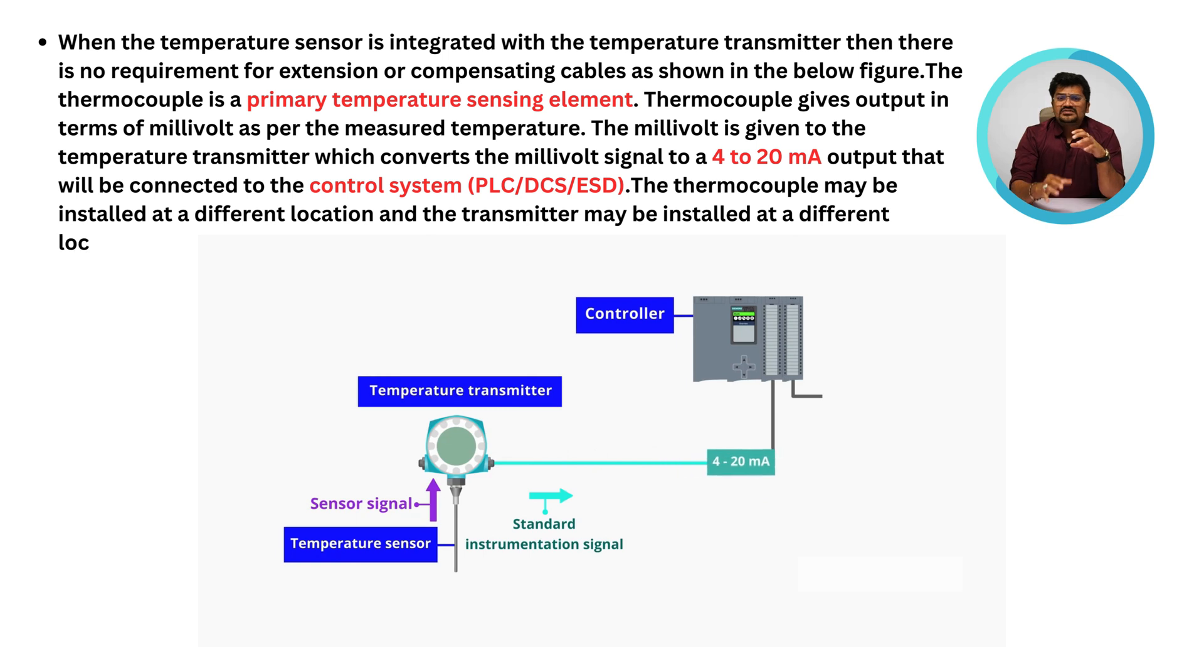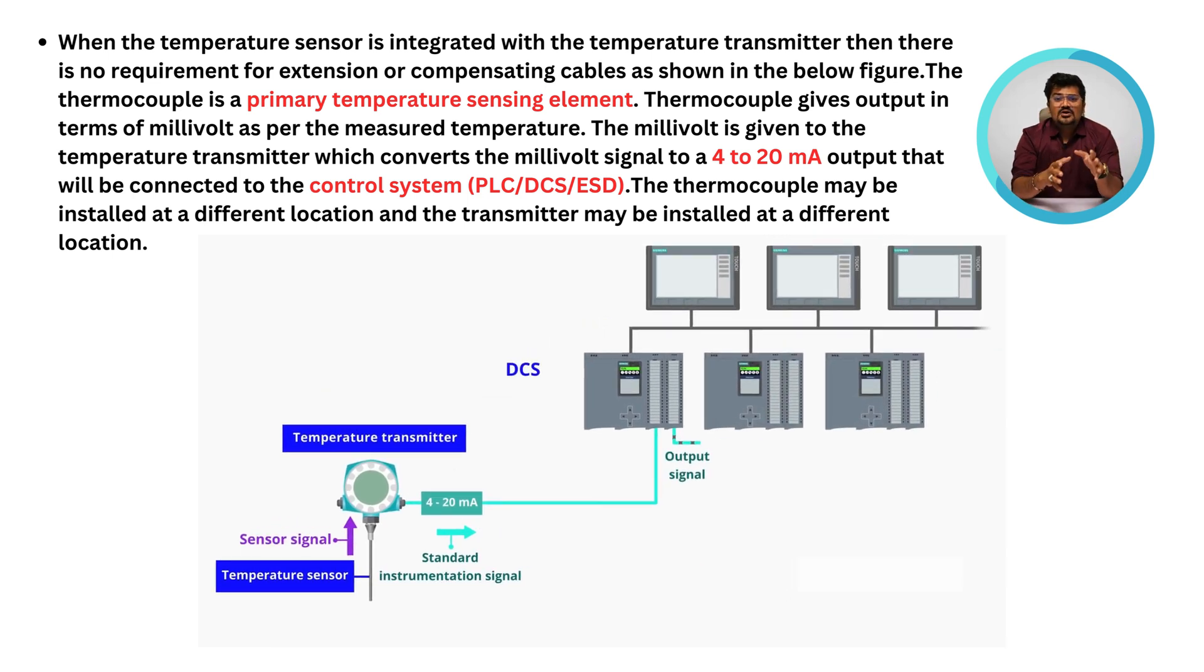The thermocouple may be installed at a different location and the transmitter may be installed at another different location. So for this, we need cable to connect the thermocouple and temperature transmitter. From the above discussion, we can use either thermocouple extension cable or thermocouple compensating cables.